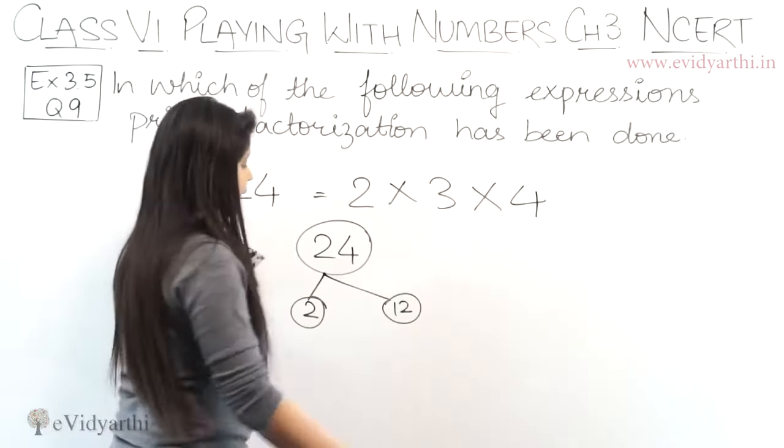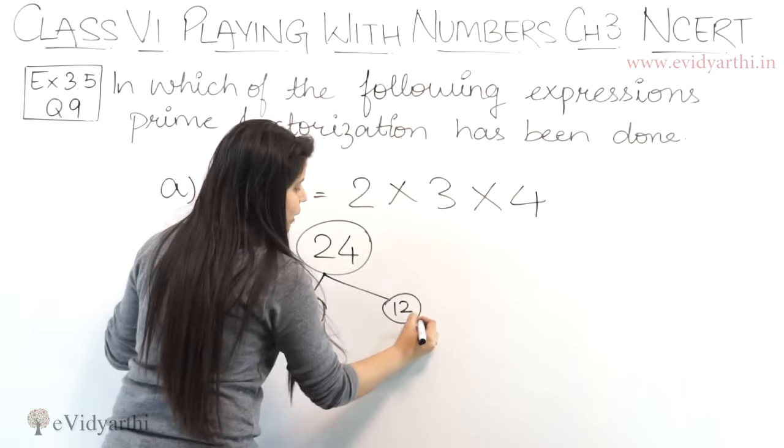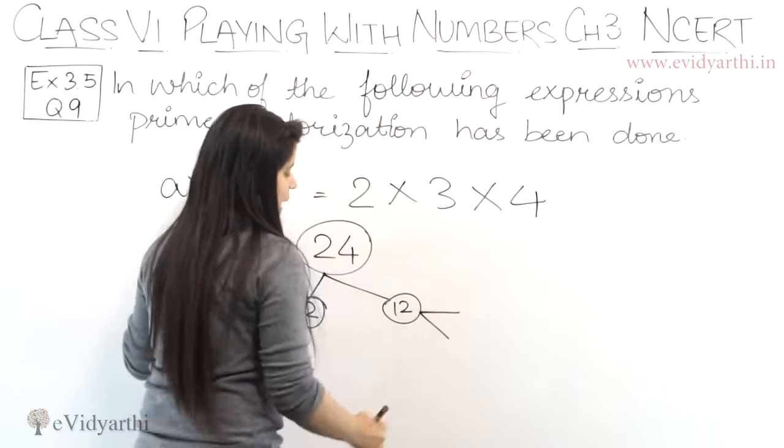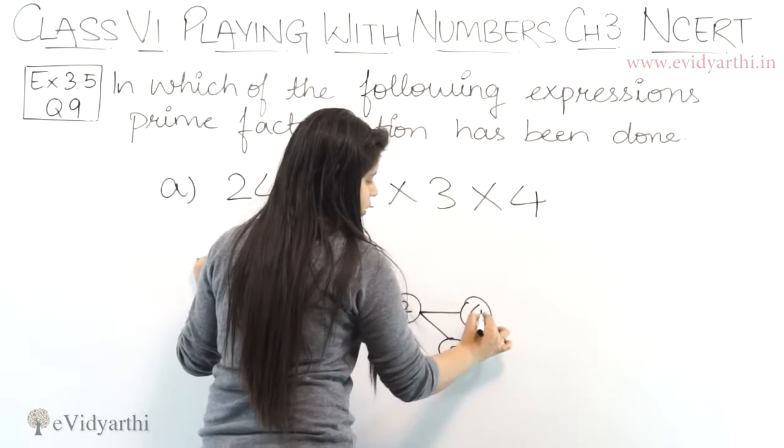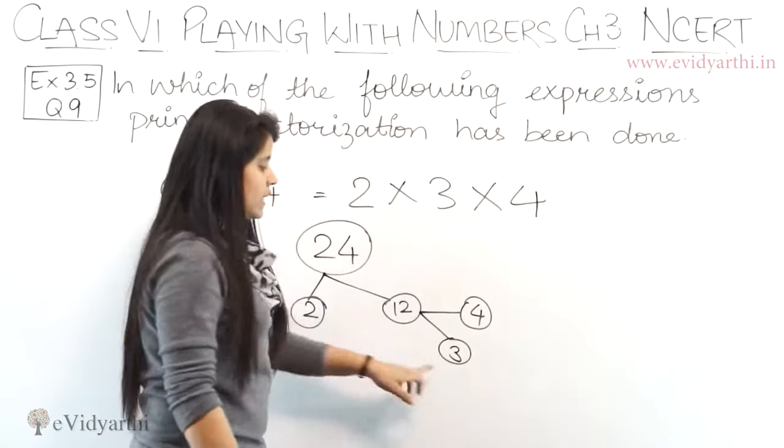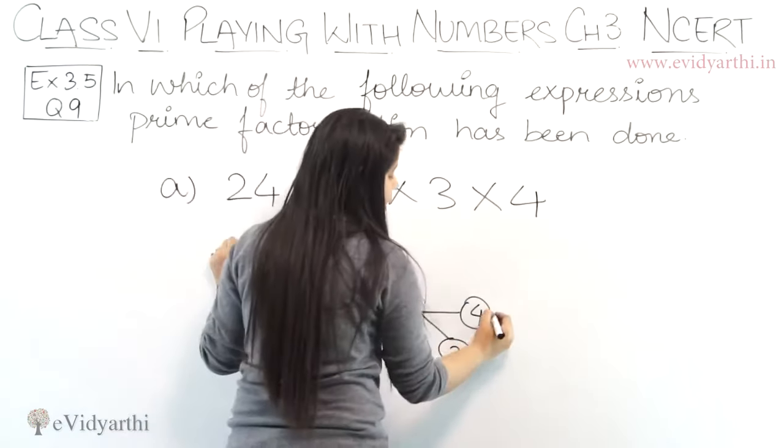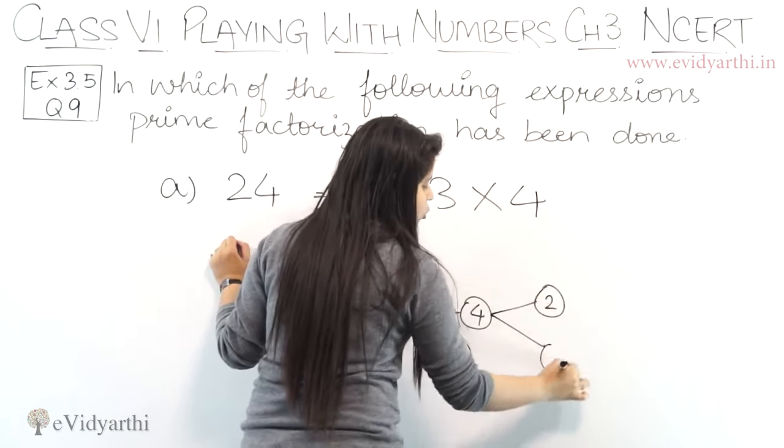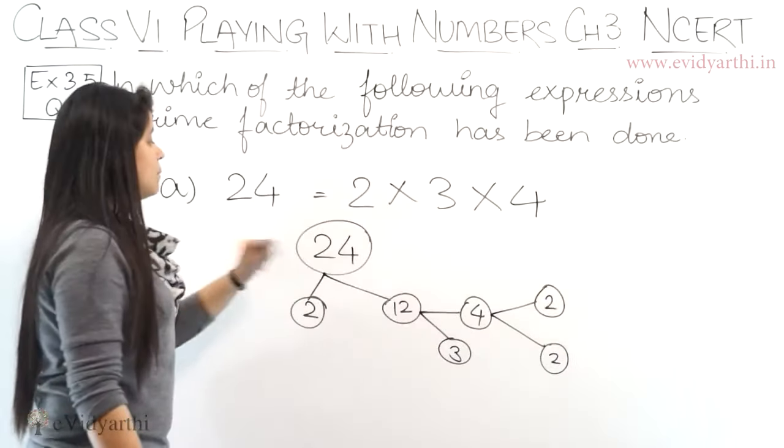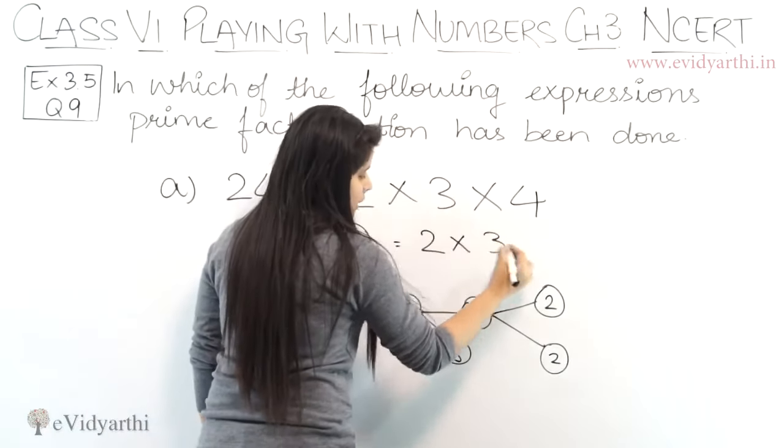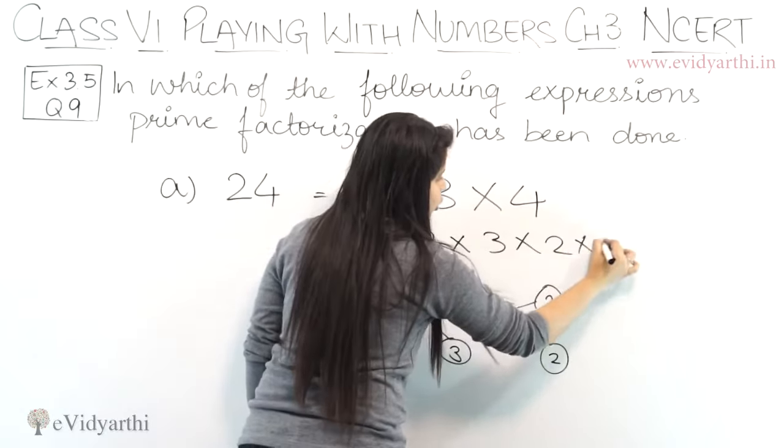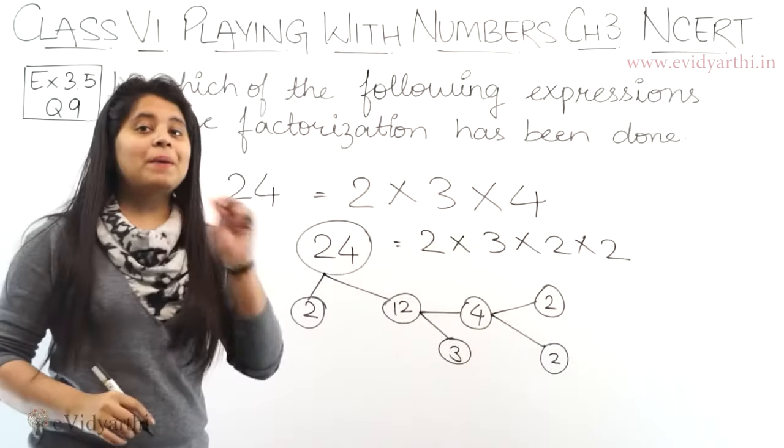Now 12 can be expanded further. So 12 can be expanded as 3 into 4, right? Now 3 cannot be expanded further because it's a prime number, but 4 can be expanded. So that will be 2 into 2. So if I write 24's factors, that will be 2 into 3 into 2 into 2. Prime factors means prime numbers.